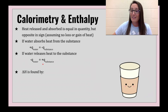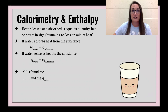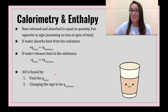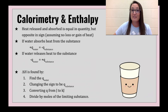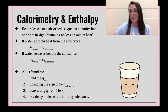To find the enthalpy of a reaction, solution, or neutralization: step one is find the heat that the water has gained or lost. Then change the sign so the substance has the opposite sign for heat. Convert from joules to kilojoules, then divide by the moles of the limiting substance that went into the calorimeter.